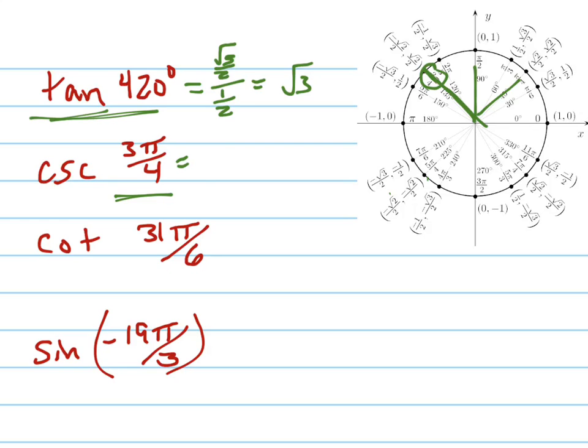Cosecant, remember, is the reciprocal of the sine. So I take the sine, which is root 2 over 2. And remember, root 2 over 2 is just 1 over square root of 2. So I rewrite that as 1 over the square root of 2. And I multiply by the reciprocal. And the answer is just the square root of 2. So the cosecant of 3π over 4 is the square root of 2.